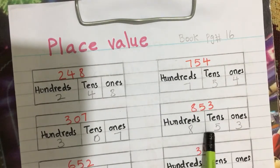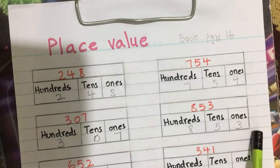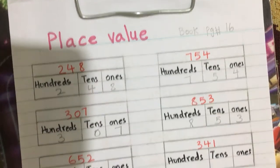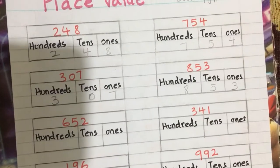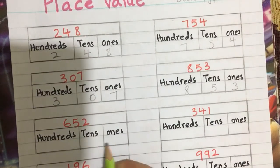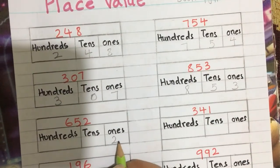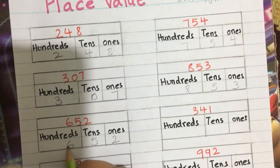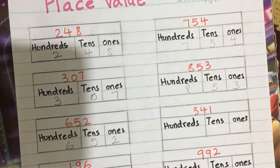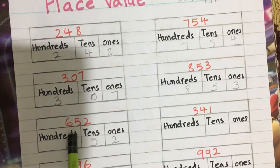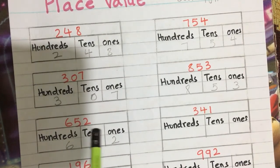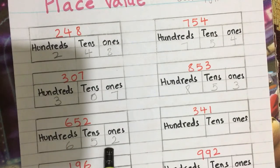The next number is 358. This number has eight ones, five tens, and three hundreds, so this is three hundred and fifty-eight. The number 256 has six hundreds, five tens, and two ones, so this is six hundred and fifty-two.